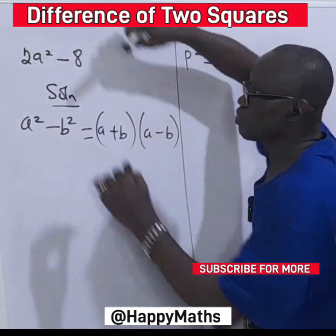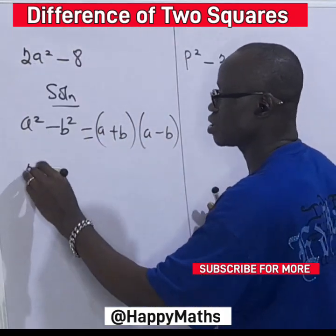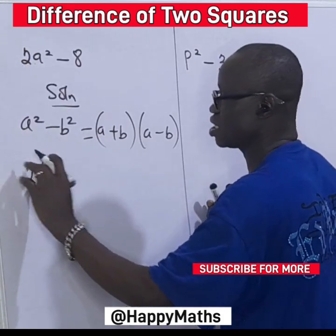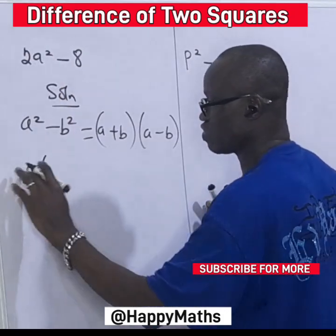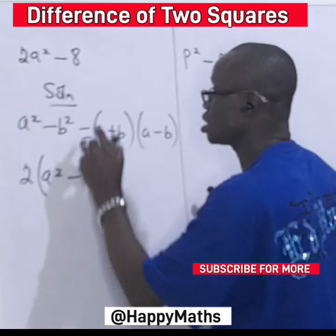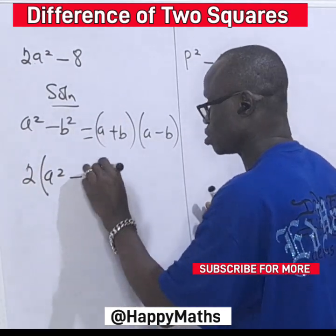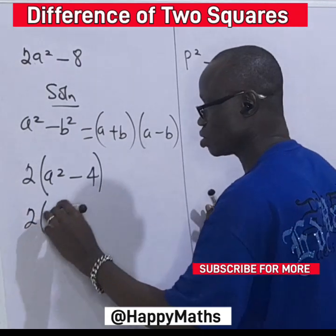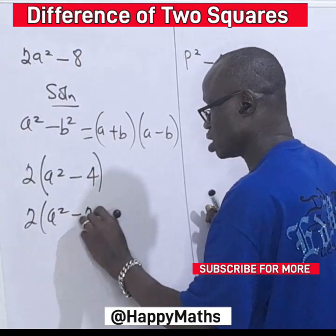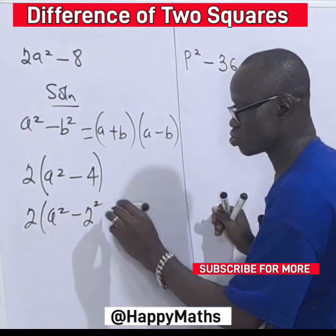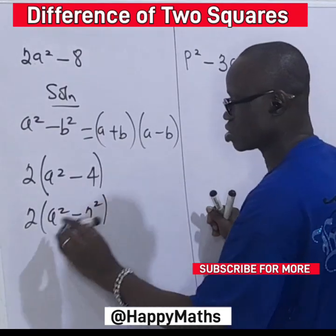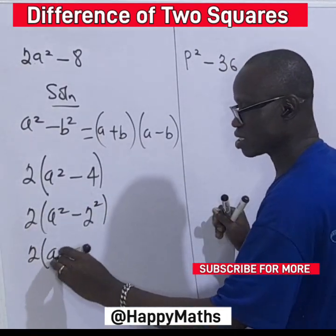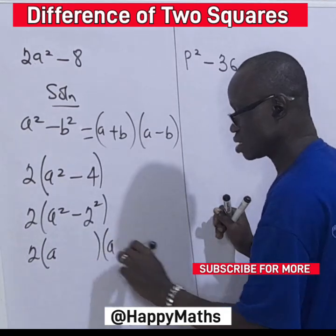Now what we do here — two can divide itself, so let's factor it out. Two a squared divided by two gives you a squared. Eight divided by two gives you four. If you solve for that, this is two a squared, and four is two times two.